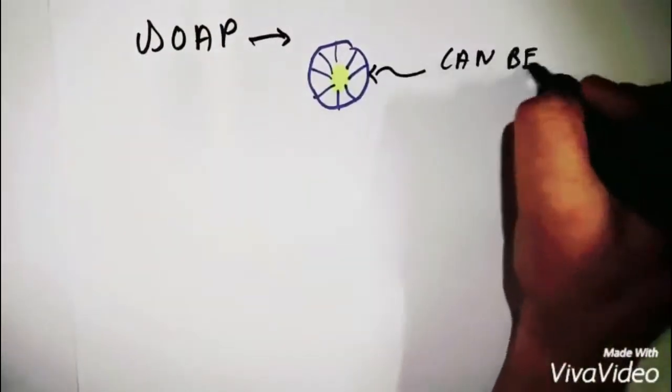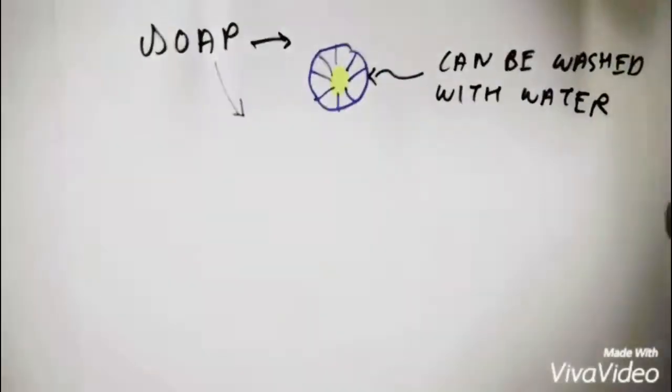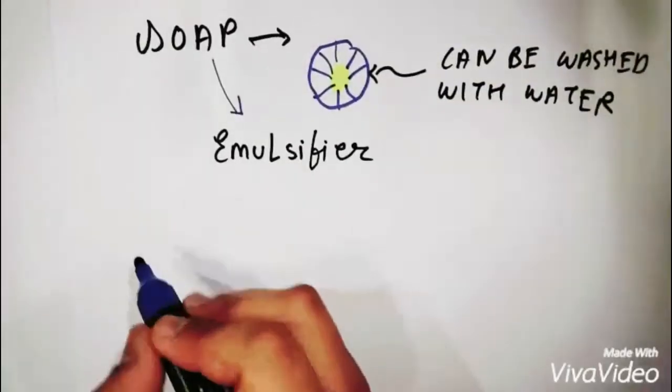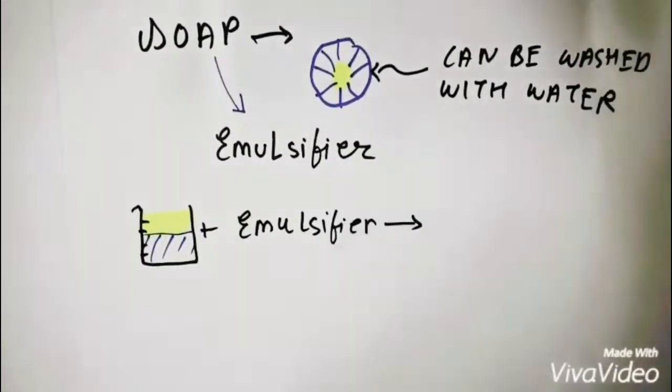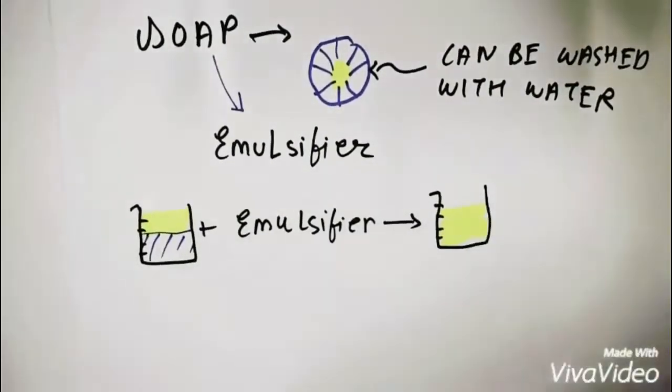What soap does is that it traps the oil particle inside a water particle so that it can be washed with water. Soap basically acts as an emulsifier. An emulsifier is the substance that is used to mix two immiscible substances.